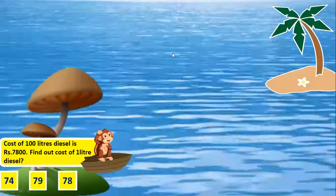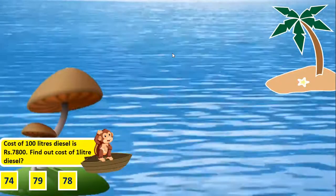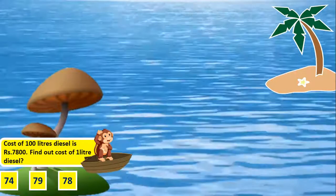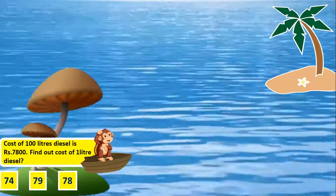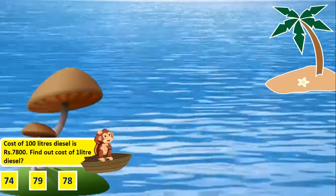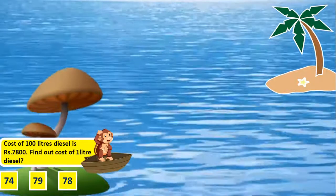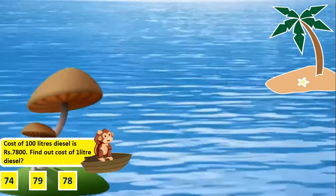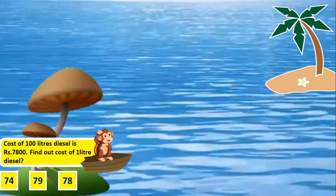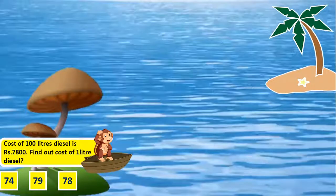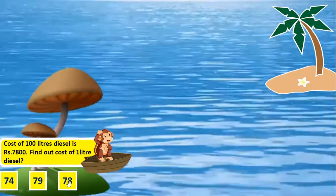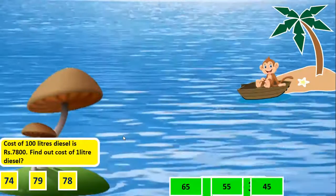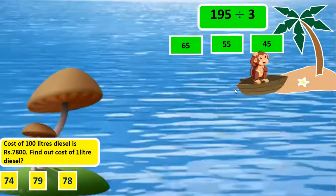Cost of 100 liters diesel is 7800 rupees. Find out the cost of 1 liter diesel. 100 liters is 7800, then 1 liter is 7800 by 100. Cancel the zeros. We will get 78.